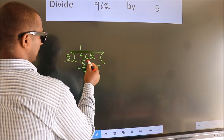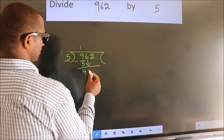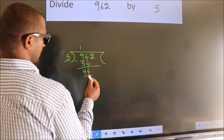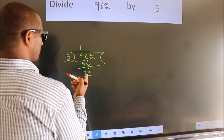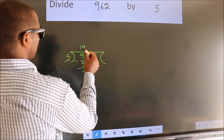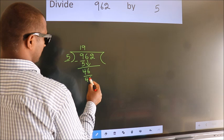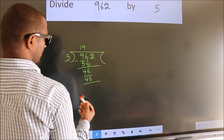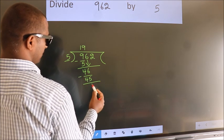After this, bring down the beside number. So 6 down. So 46. A number close to 46 in 5 table is 5 nines 45. Now we subtract. We get 1.